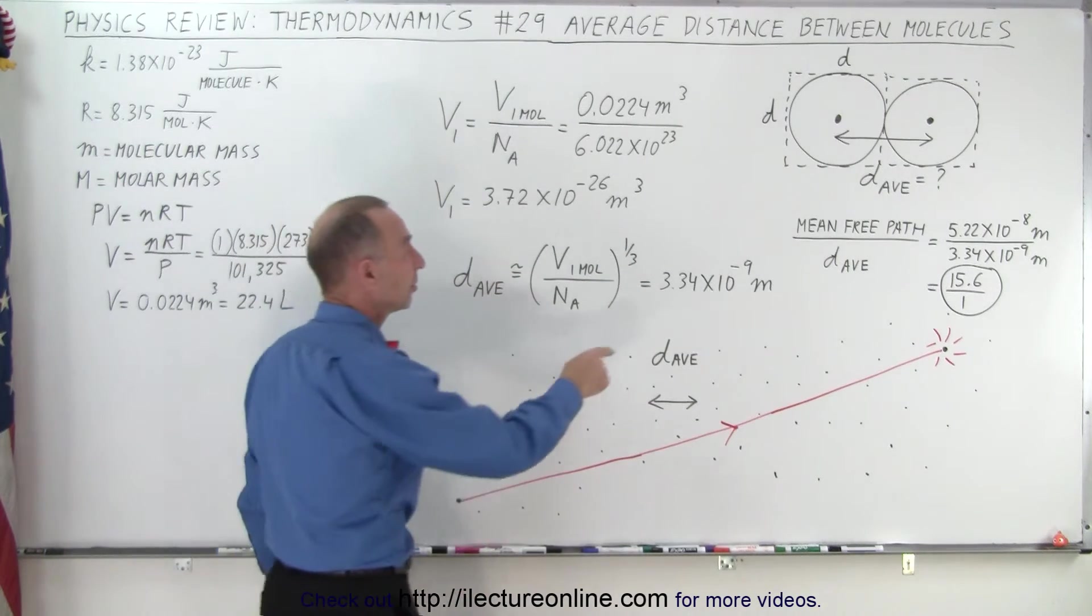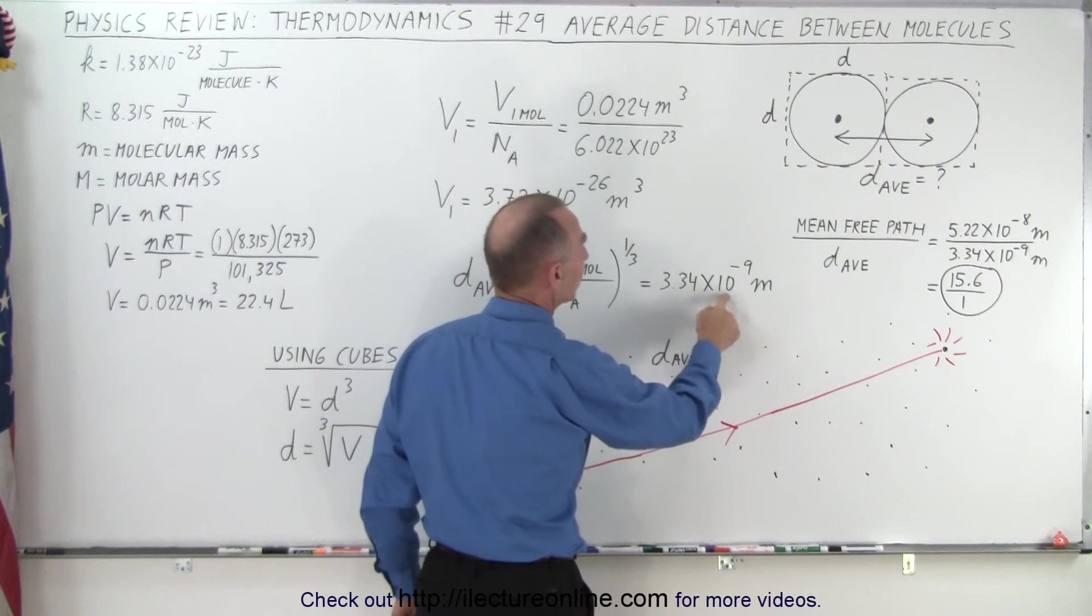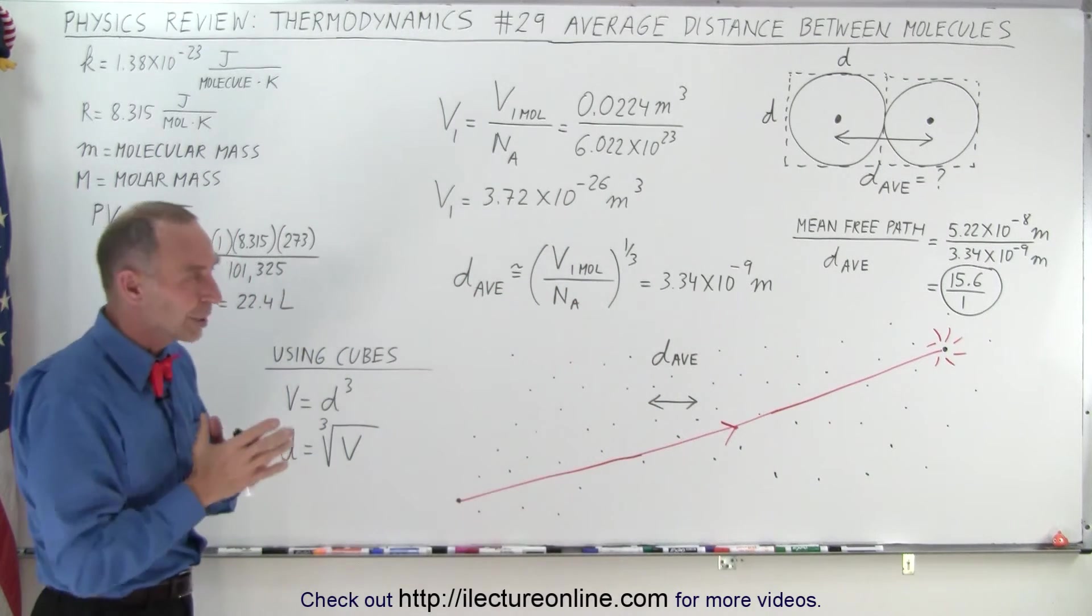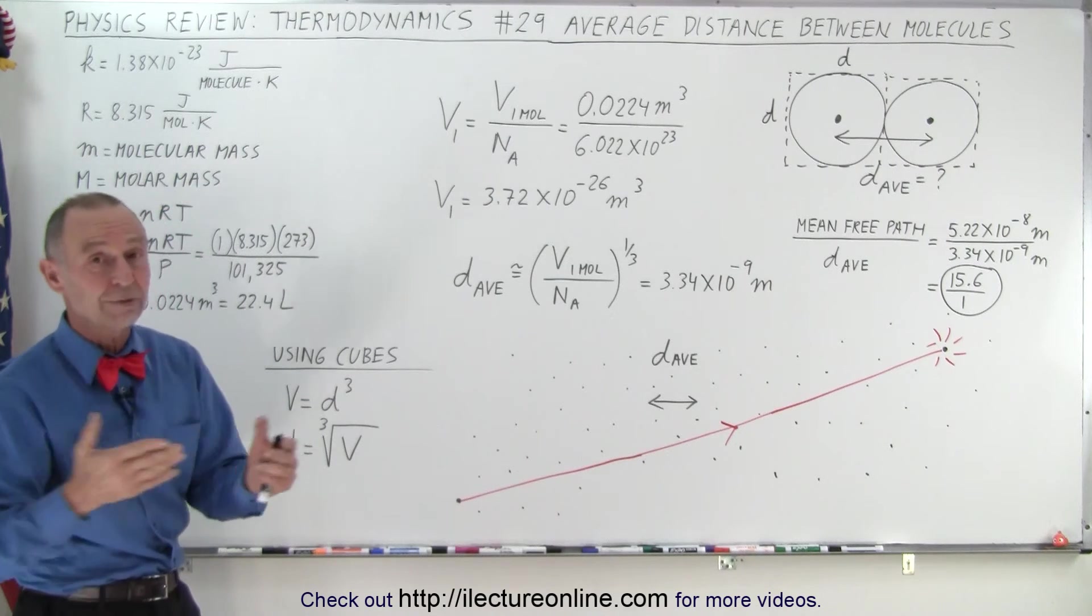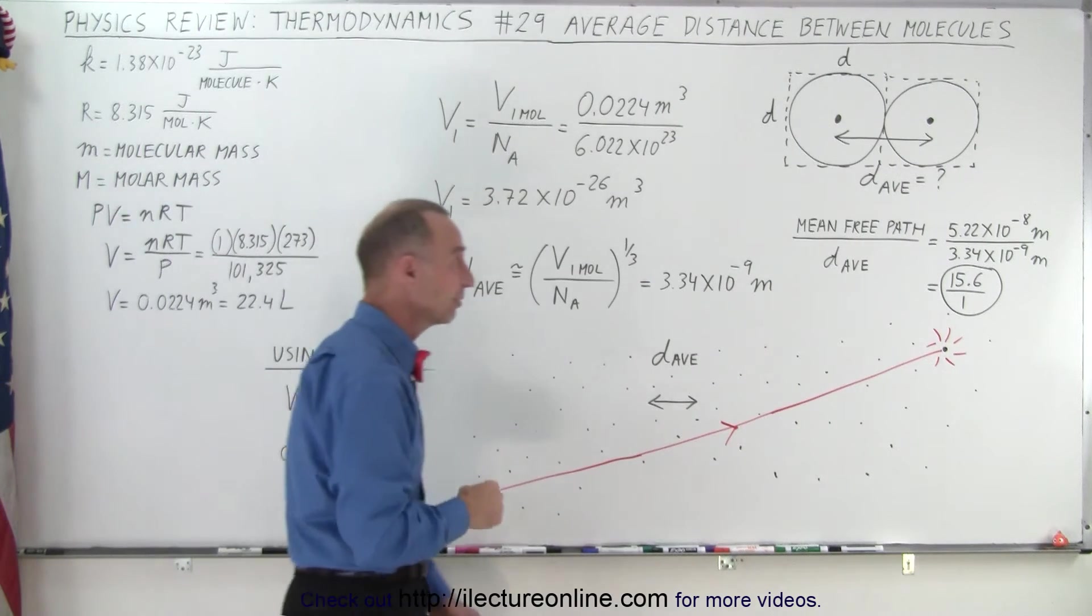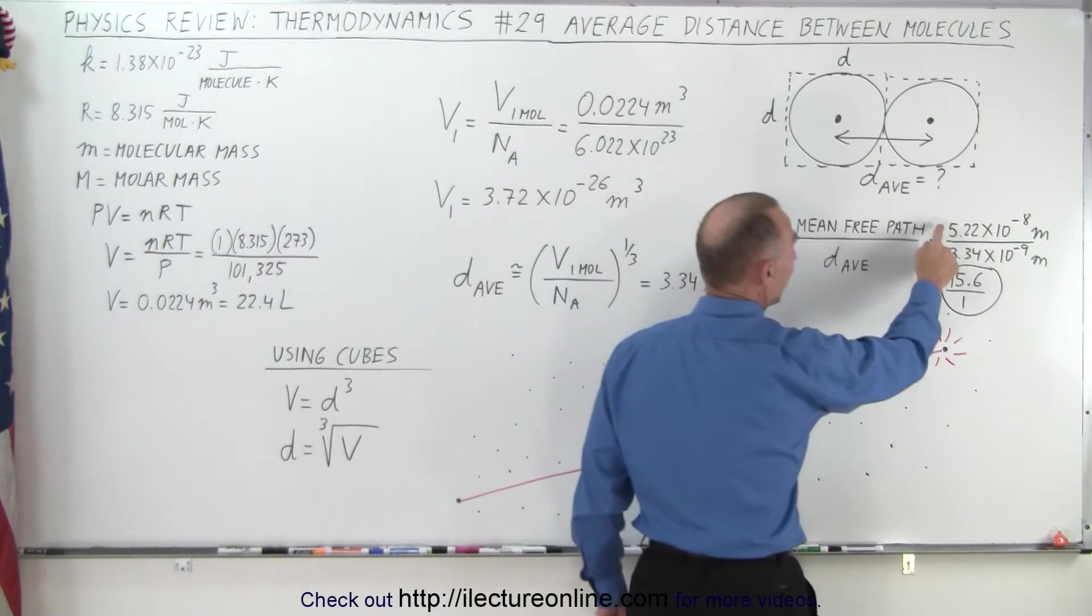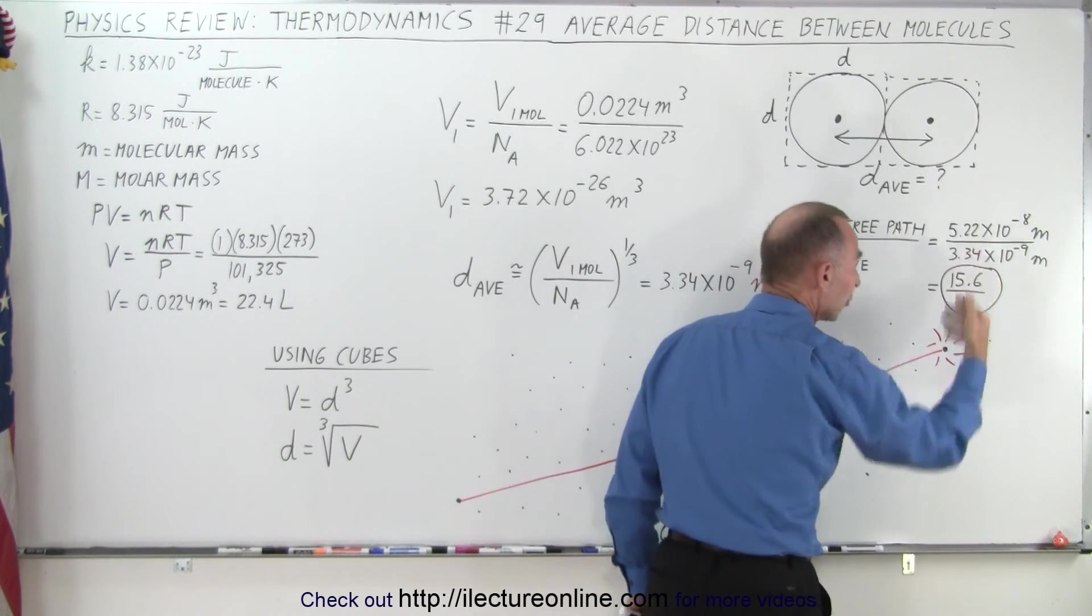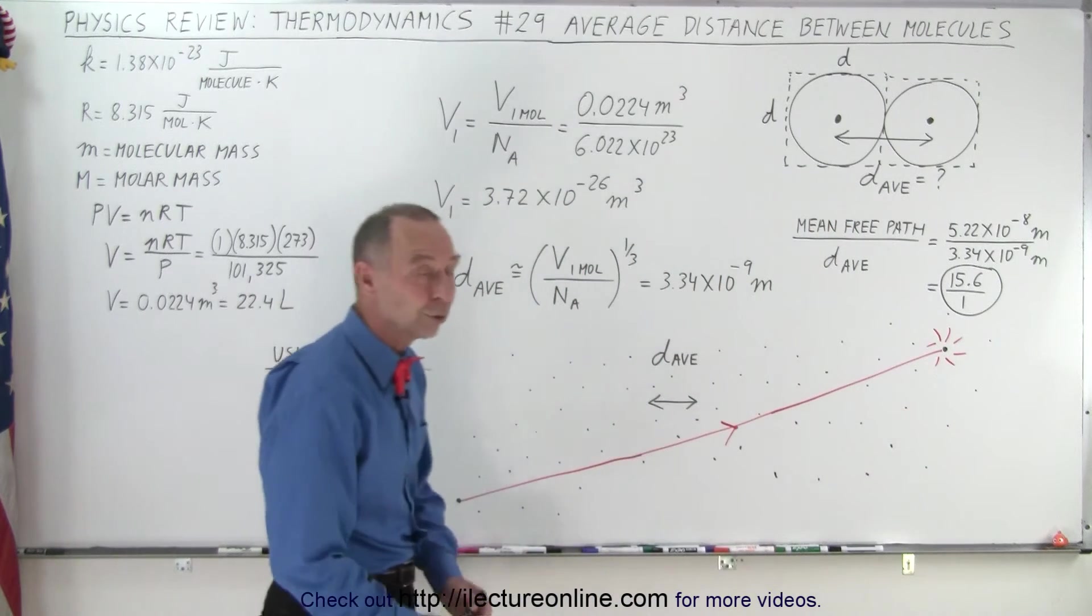If we do, we get the distance of 3.34 times 10 to the minus 9 meters. Now, how does that compare to the distance a molecule travels before it collides with another molecule? If we take a look at the previous video, that's the mean free path which we calculated, divided by the average distance, and notice that's a ratio of about 15.6 to 1.